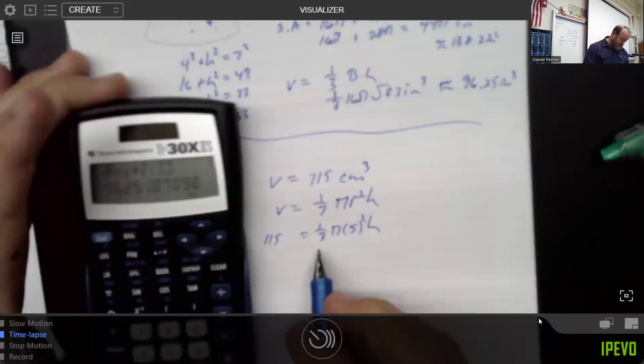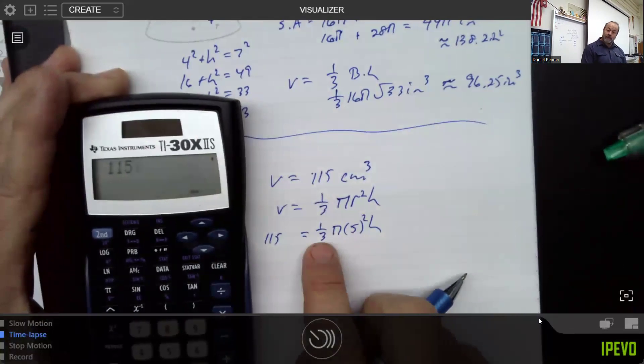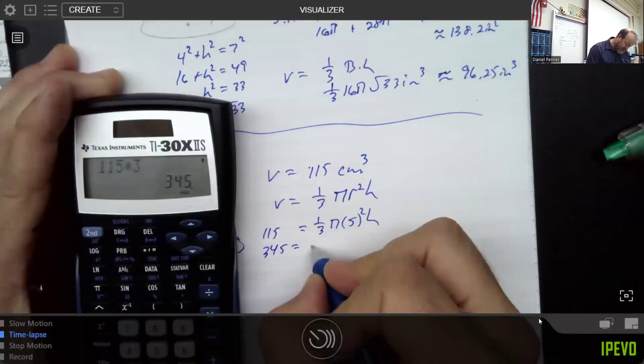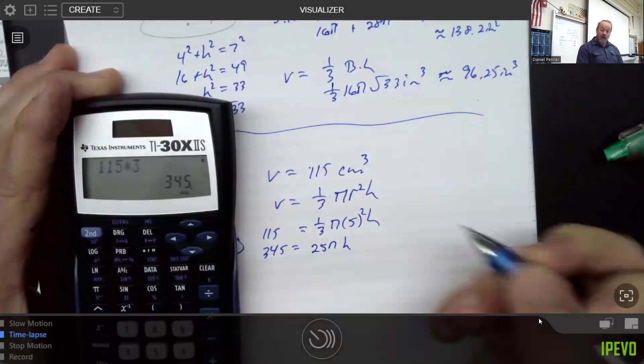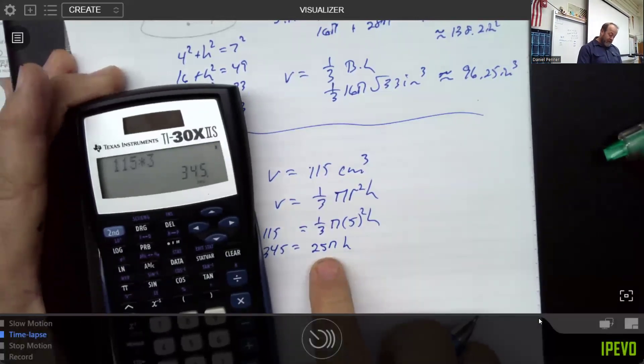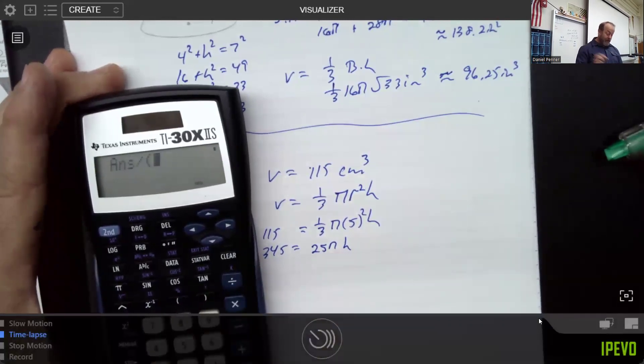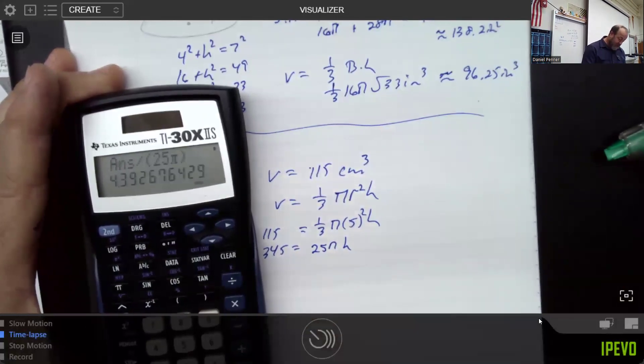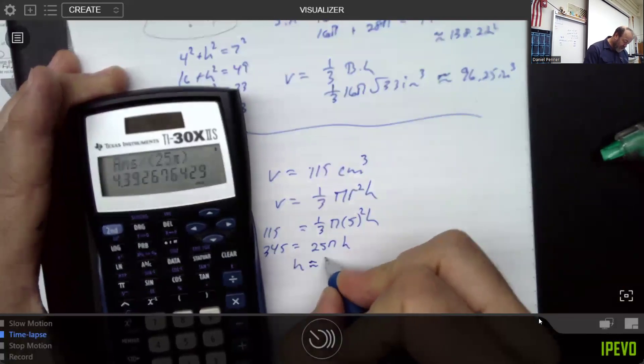So let's see, the first thing I would do is I want to get rid of this three right here. So since I'm multiplying by a third, also known as dividing by three, let's times by three. So 345. And this would be 25 pi h. So I'm now going to divide both sides by 25 pi. And I'm going to put that 25 pi in parentheses. Otherwise, my calculator will not understand what I meant. And I just found my height was approximately 4.39 centimeters.